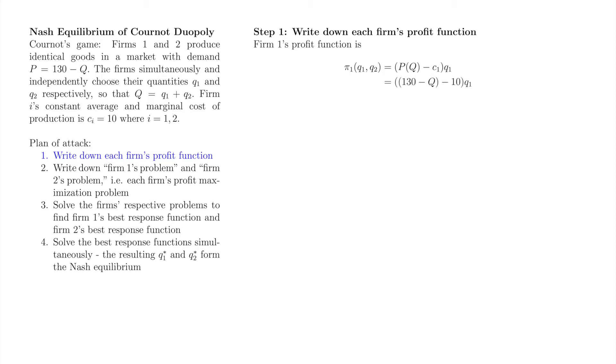Replace big P of big Q with the market demand function 130 minus big Q, and replace C1 with firm 1's constant average and marginal cost of production, 10. Replace big Q with little q1 plus little q2. After some algebra, obtain little pi of q1 and q2 equals 120 minus q1 minus q2 all times q1.